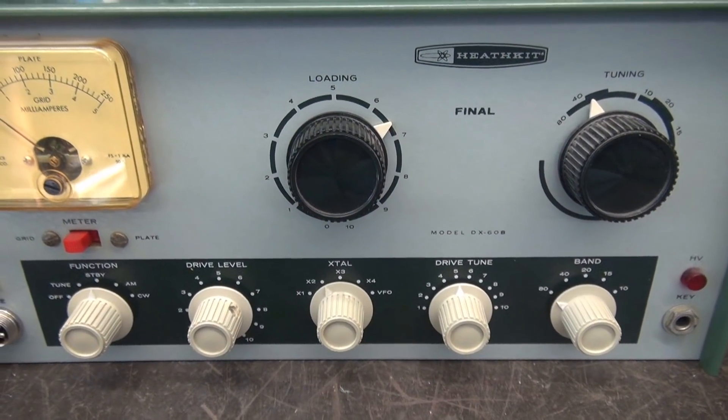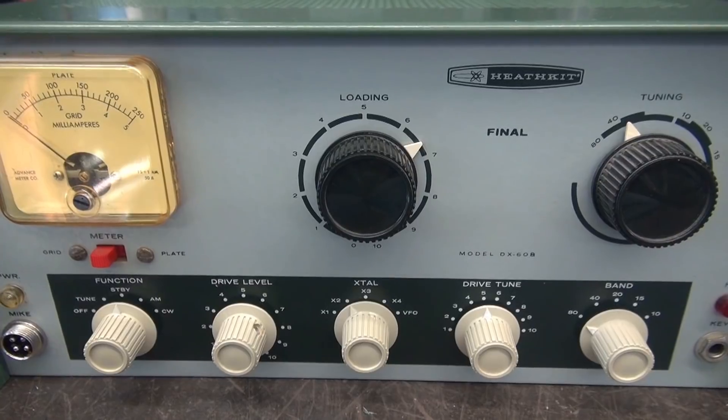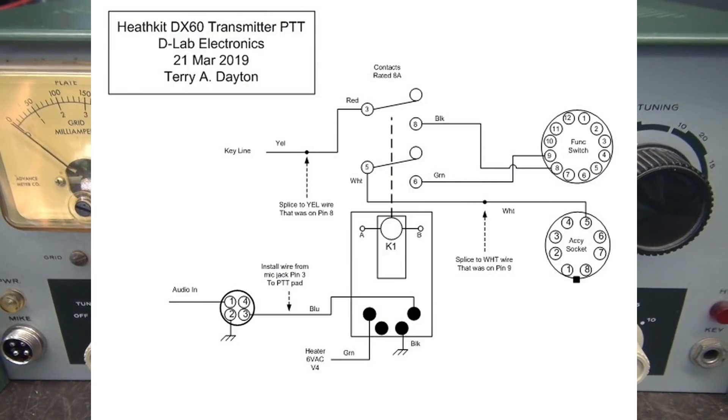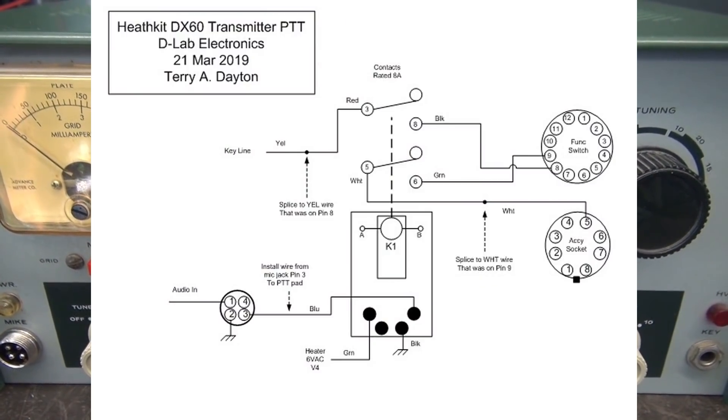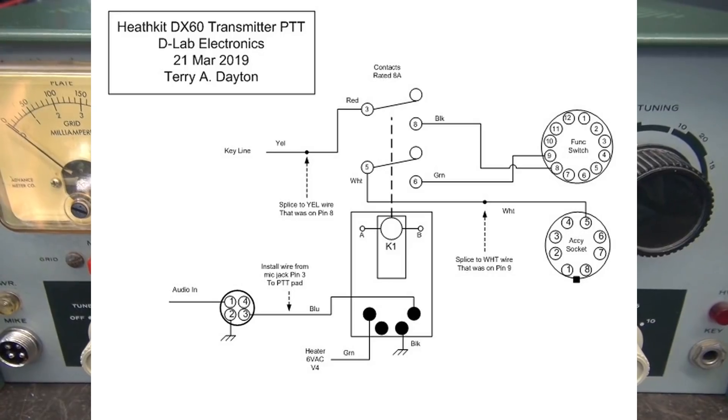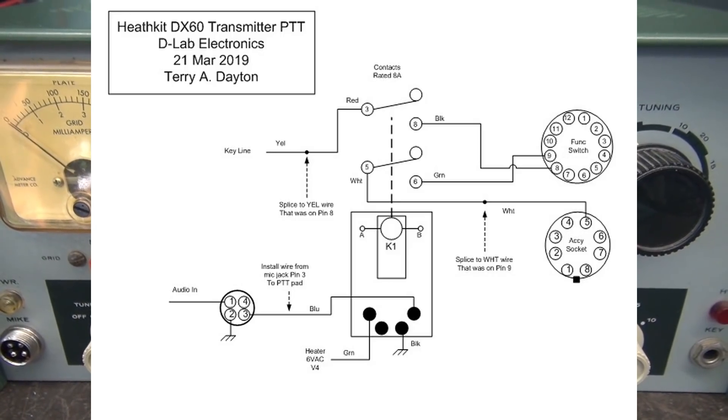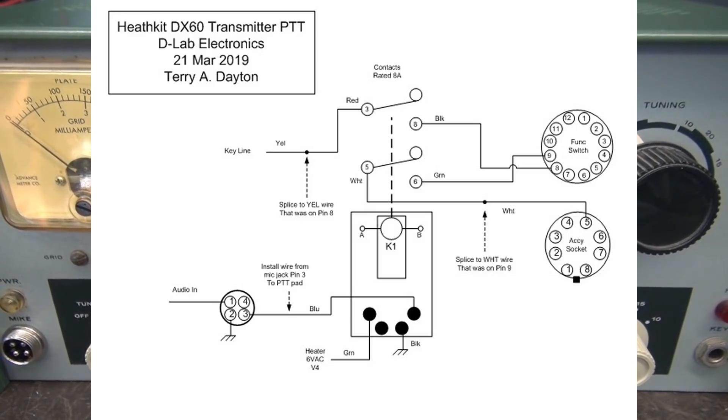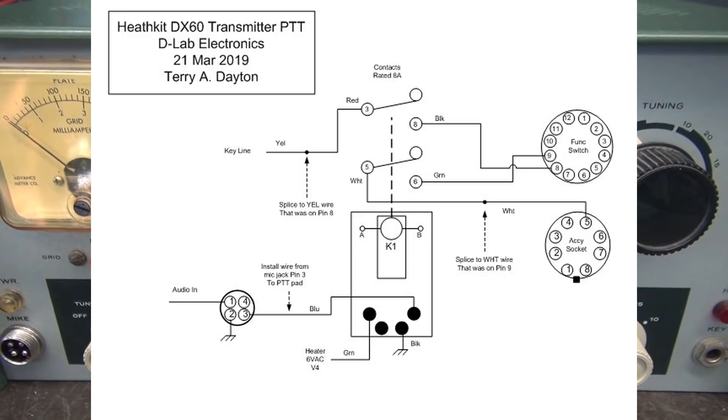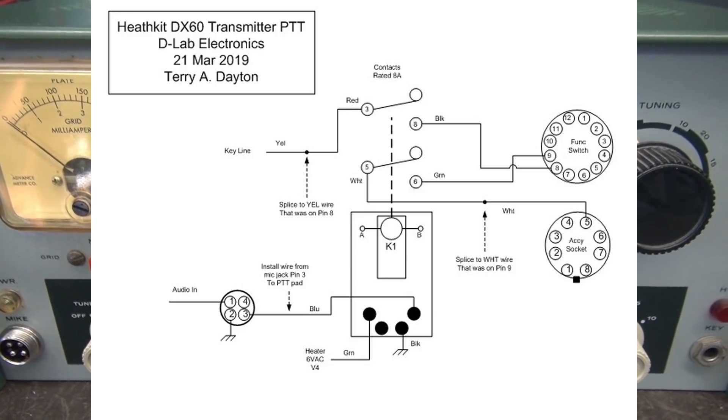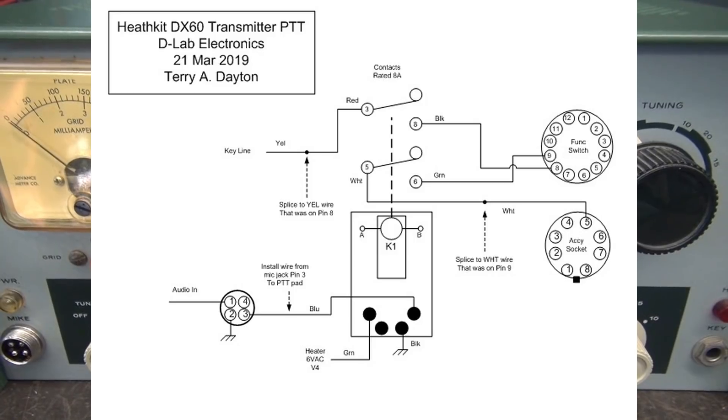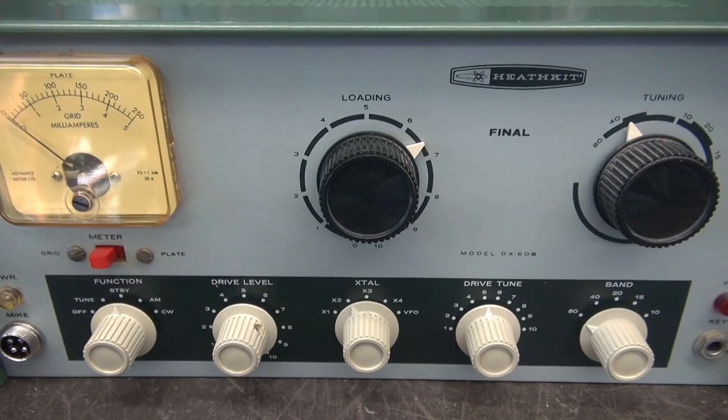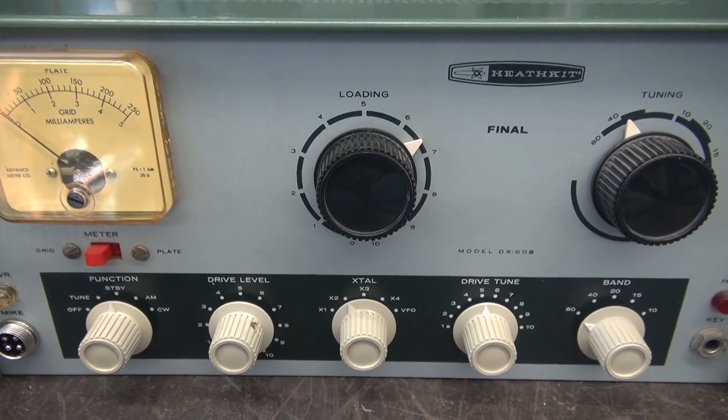I've revised the schematic for the push to talk K1 module installation. You can see it's fairly straightforward - you pretty much pop in the module, hook up a few wires. The most difficult part is interfacing to that function switch because there's really no way to get to that bottom terminal without pulling the switch out. I guess you could just go back into the wire harness, cut the wire and splice it at that point without pulling the switch, but that's up to you. I prefer to hook directly to the terminal of the wafer switch when possible.